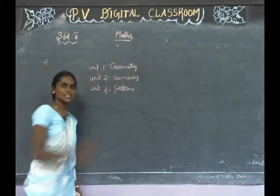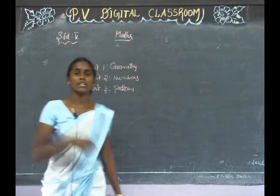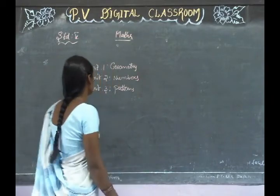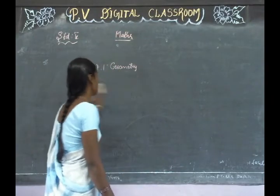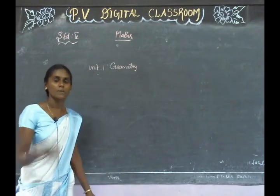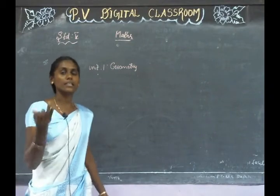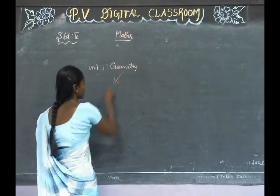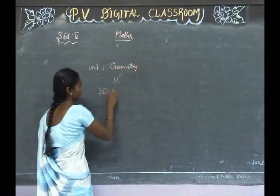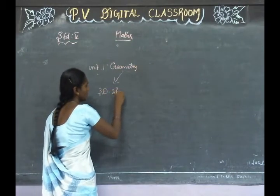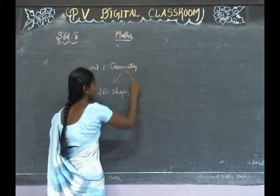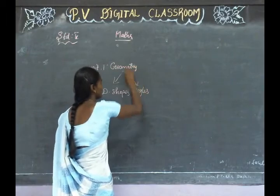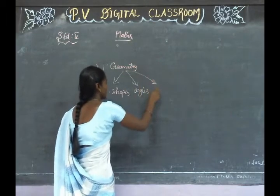Now we are going to talk about three lessons. First, we will explain about geometry. In geometry, there are three topics. First one is 3D shapes. Next, what are angles? Then next one is symmetry.